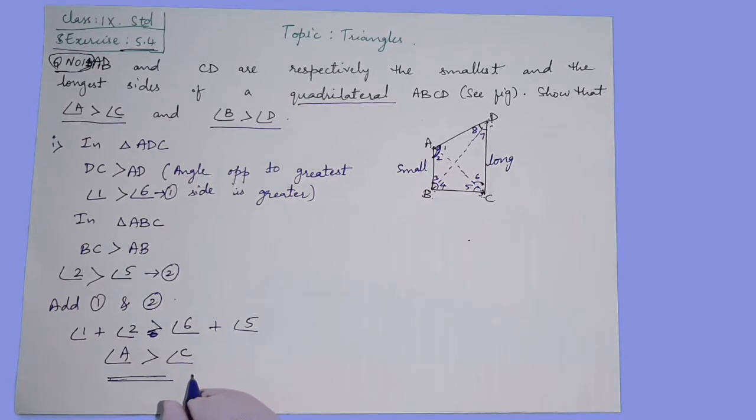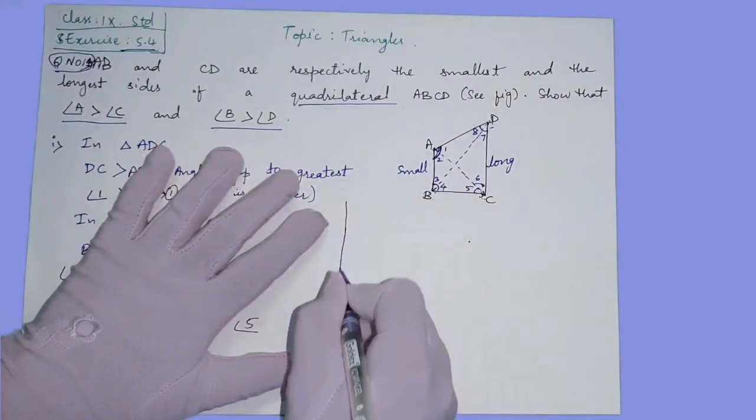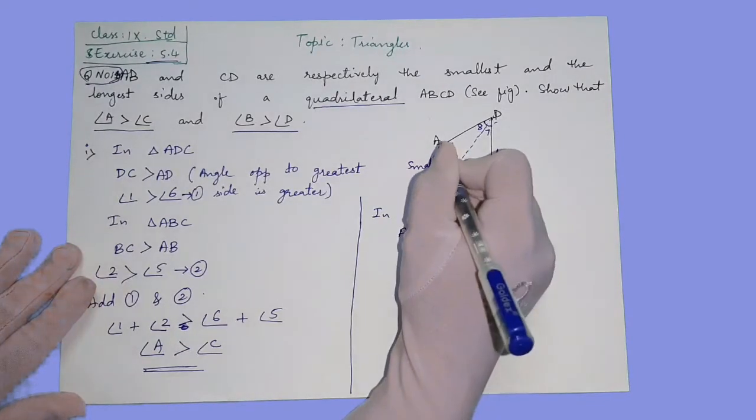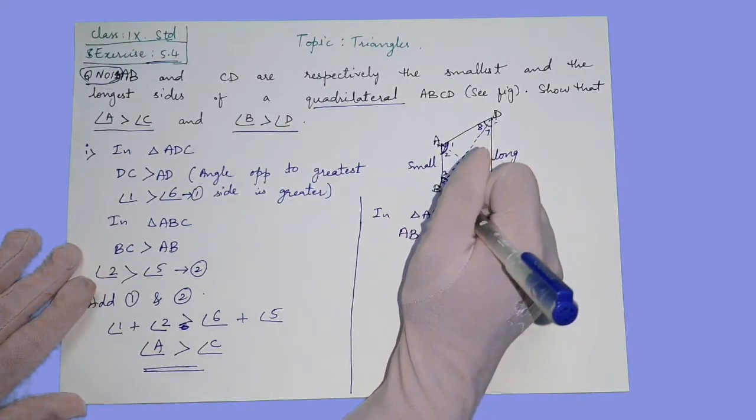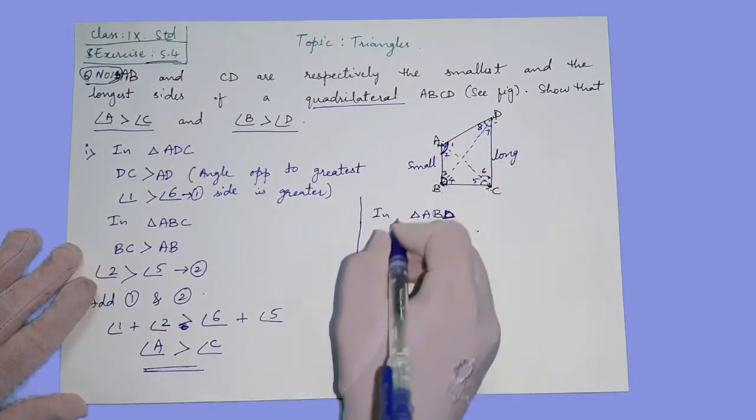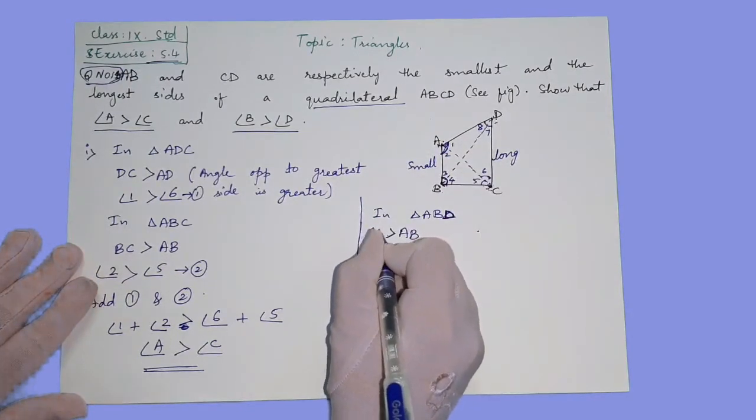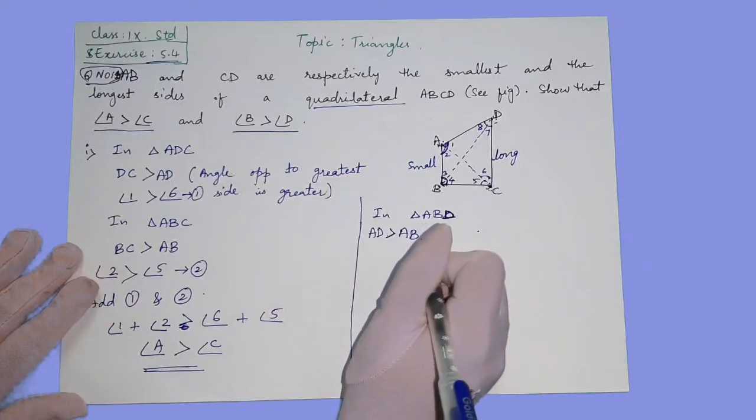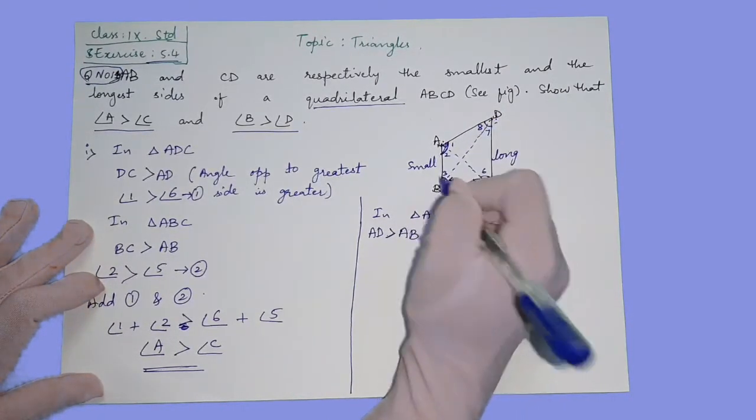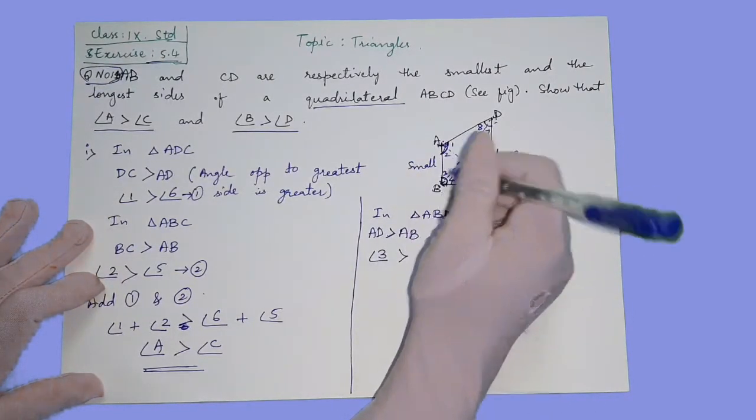Now the second thing. Same steps we have to follow with different triangles. In triangle ABD, AB is smaller, so AD must be longer. AD is greater than AB. AD's opposite angle is angle 3 and AB is opposite angle 8.